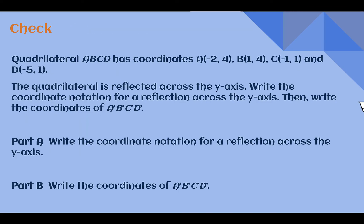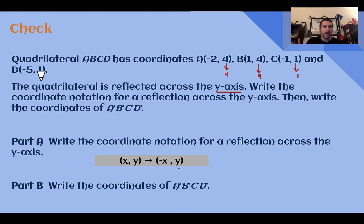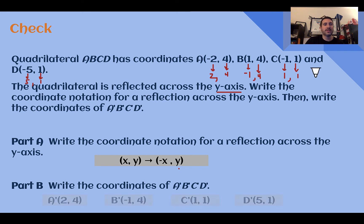Check your understanding — read through the situation and answer both parts. Pause the video now and complete this check. Check your answer. First, coordinate notation: because we are reflecting across the y-axis, the y stays the same and the x is the opposite. The y-coordinates all stay as 4 and 1. For our x-coordinates, opposite: -2 becomes 2, 1 becomes -1, -1 becomes 1, and -5 becomes 5. So the new coordinates are (2, 4), (-1, 4), (1, 1), and (5, 1).